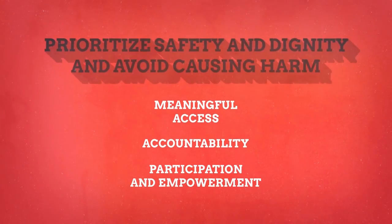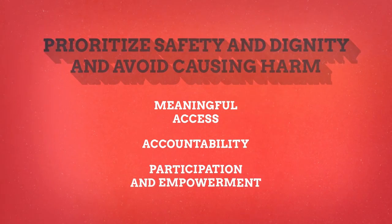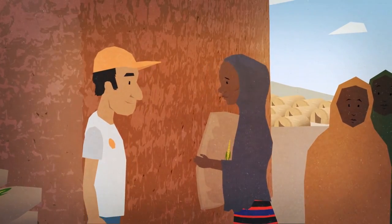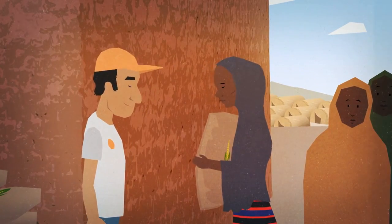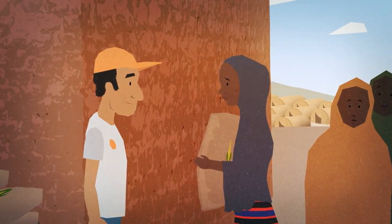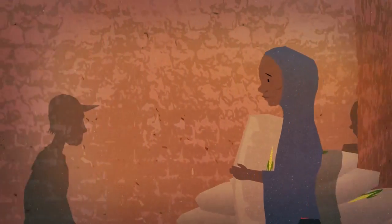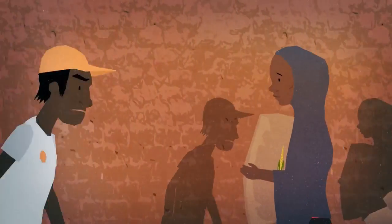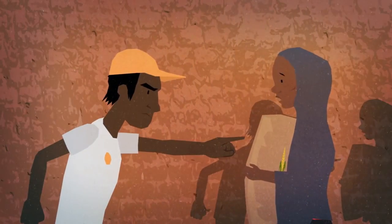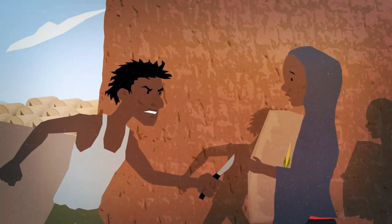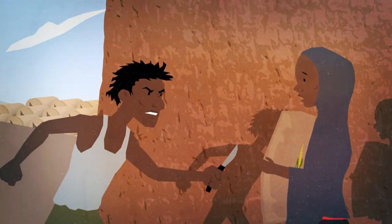1. Prioritise safety and dignity and avoid causing harm. This is about avoiding or at least mitigating the effects of physical and psychological threats faced by affected populations when accessing humanitarian services. These threats can be internal or external.